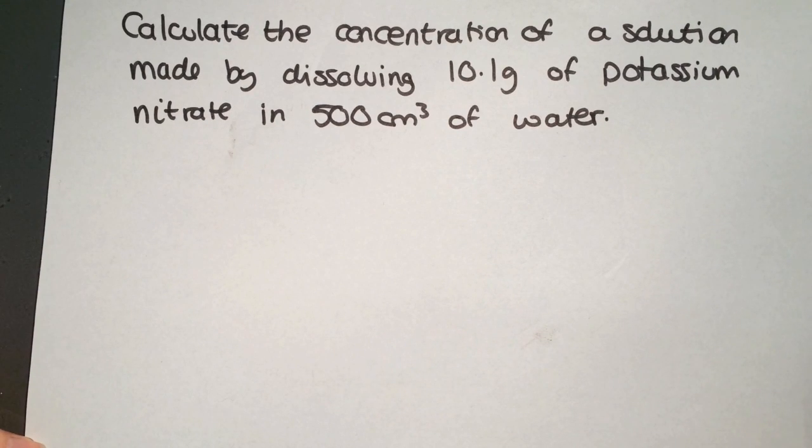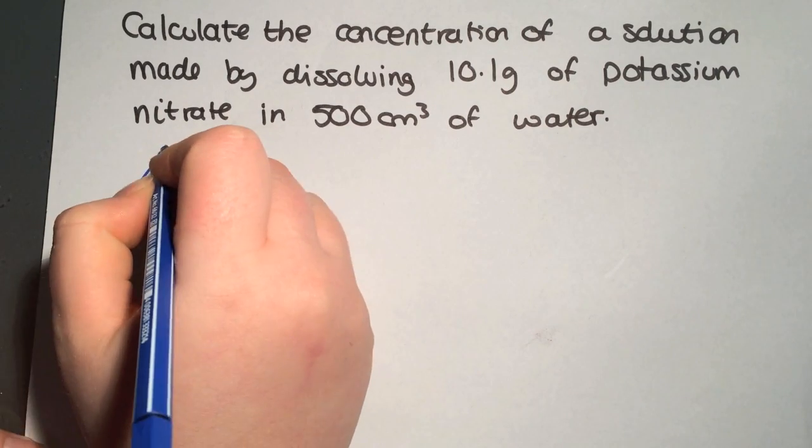In this video we're looking at a situation where you're given a mass of solute and asked to work out the concentration of a solution, or you're given a concentration and asked to work out what mass of solute would be required. To do these calculations, you need to draw out both of your triangles.